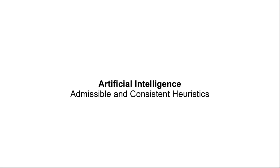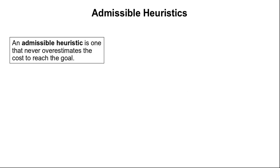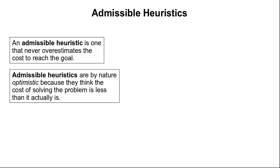Hello, welcome to today's class. In today's class we will talk about admissible and consistent heuristics. An admissible heuristic is one that never overestimates the cost to reach the goal. Admissible heuristics are optimistic by nature because they think that the cost of solving the problem is less than it actually is.